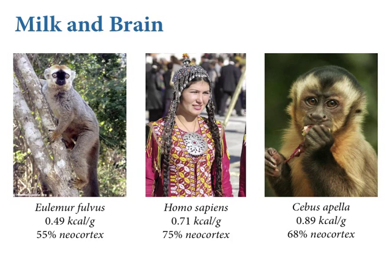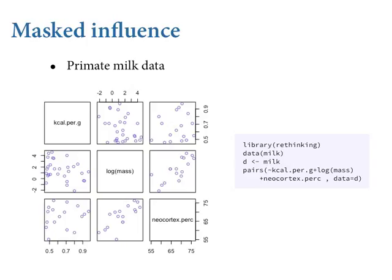This is a fun teaching dataset because no one actually knows the answer. We're going to look at just three variables, plotted in a pairs plot. Pairs plots show all the bivariate relationships among variables in a dataset. There's a command in R called pairs. We'll look at kilocalories per gram of milk as the outcome, the log of female body mass, and the percent of brain mass that is neocortex.